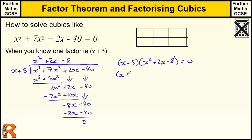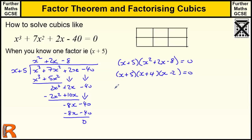Then we can go on to solve that using a standard factorisation. It's a nice quadratic factorisation — we've got x, and minus 8 here, so we need numbers that multiply to give minus 8, which is going to be plus 4 and minus 2, because that adds to give us 2. Therefore x equals minus 5, x equals minus 4, and x equals 2. Those are our solutions to this equation.